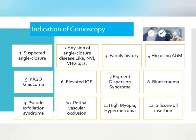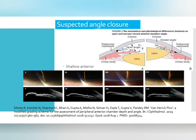These are the indications of gonioscopy: suspected angle closure, any sign of angle closure disease, neovascularization of the iris, van Herick reading 0, 1, or 2, family history of glaucoma, history of using anti-glaucoma medication, known case of glaucoma, elevated IOP, pigment dispersion syndrome, blunt trauma, pseudoexfoliation syndrome, retinal vascular occlusion, high myopia, hypermetropia, and silicon oil insertion.